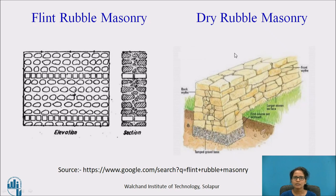Next we have dry rubble masonry. In this type of masonry, mortar is not used. It is used for the construction of retaining walls and compound walls, and is used in non-load-bearing constructions.